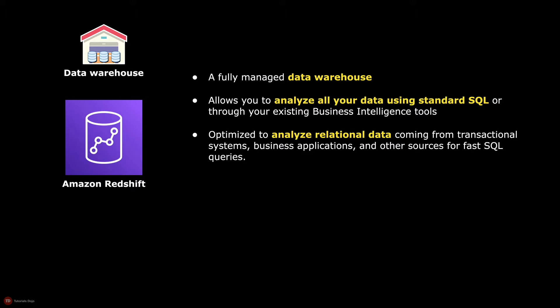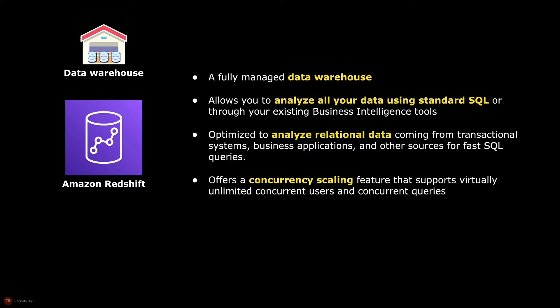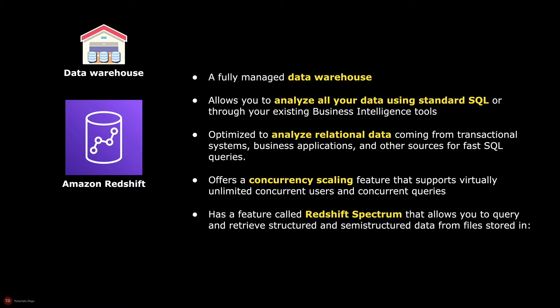This is different from a data lake where the data does not have a structure. Amazon Redshift has a concurrency scaling feature that supports virtually unlimited concurrent users and concurrent queries to achieve consistently fast query performance. It also has a feature called Redshift Spectrum that allows you to query and retrieve structured and semi-structured data from files stored in Amazon S3 without having to manually load the data into your Redshift tables.